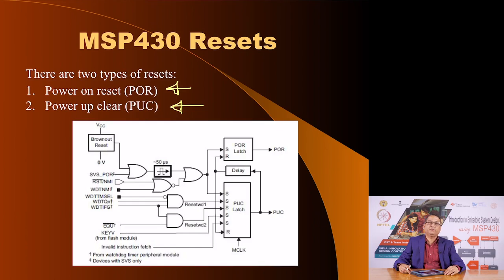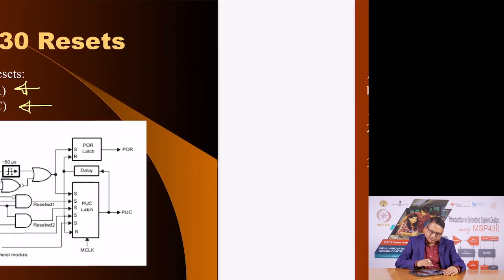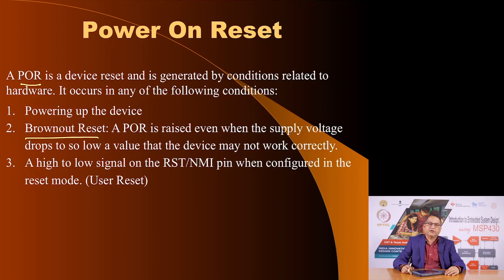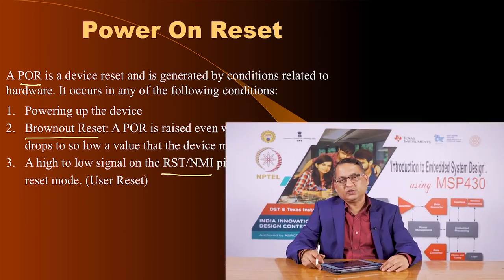Power on reset happens as the name suggests when power is applied for the first time, but power up clear can happen from other sources also. Power on reset is generated when you turn power on for the first time, when there is a brownout (if the supply voltage dips below a certain value), or when you press the RST/NMI pin. Is it possible to find out what was the source of reset — was it brownout, power on reset, or the user pressing the switch on the RST/NMI pin? Yes — MSP430 has registers which capture the source of that reset, and we are going to write code which will show which source of reset caused the system to reset.